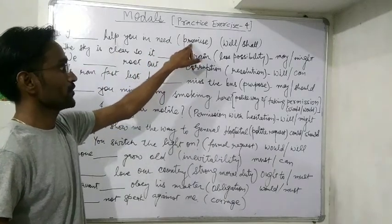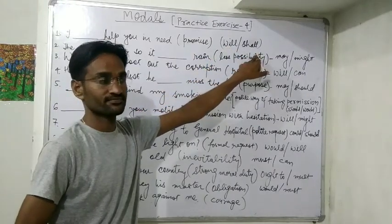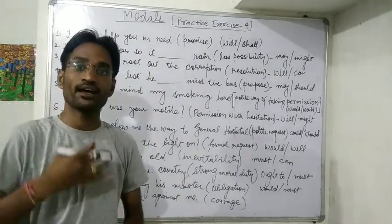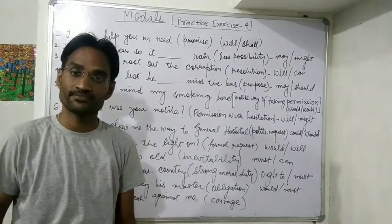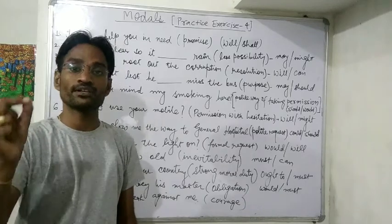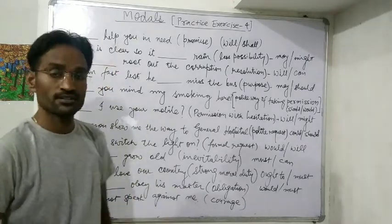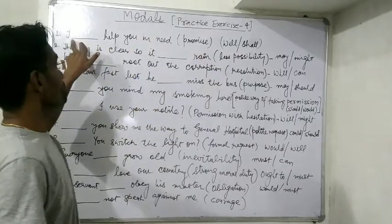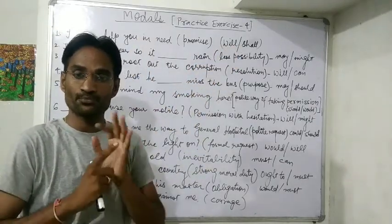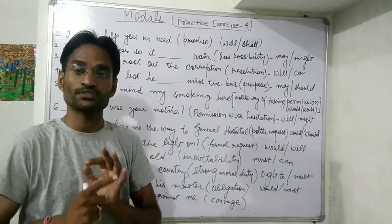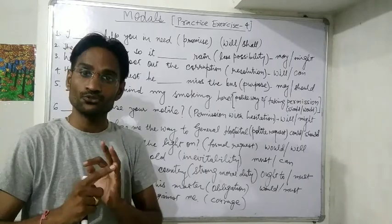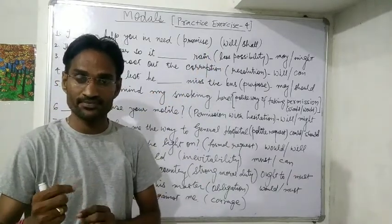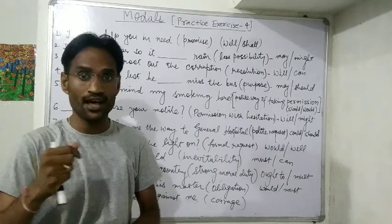The first sentence: 'I help you in need' — promise. You have to apply either 'will' or 'shall.' Whenever you are in need, I help you. I am promising. So which modal will I apply — will or shall? For a promise with the first person, 'will' is used. It shows promise, willingness, determination, and resolution.